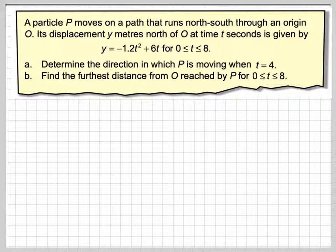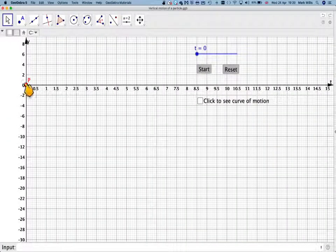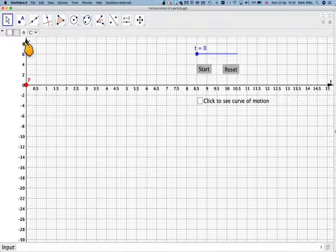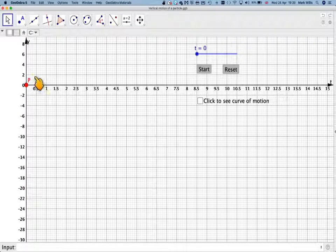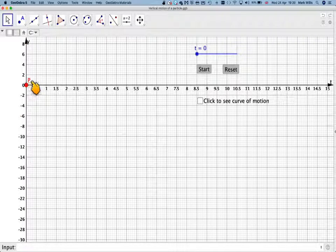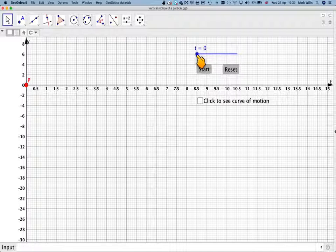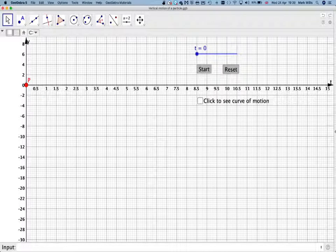If we first look at this GeoGebra app, I will put the link in the notes of this video. So here we have a particle P which is going to move in a north-south direction which passes through the origin. We've got the time starting here from 0, so we'll just have a look at its motion.